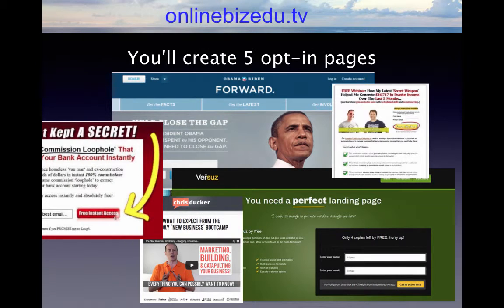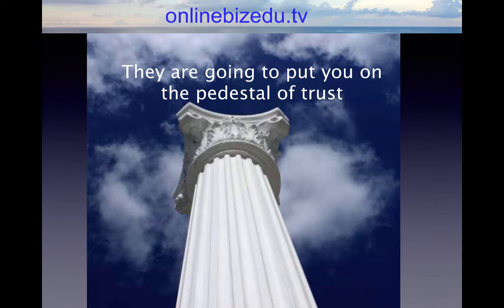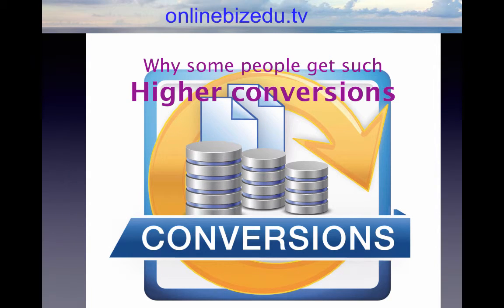Since you have five reports, you will create five opt-in pages — and that is kind of the secret. You have five reports, so you are going to create five opt-in pages. The reason for this is because you already know your target prospect was searching for a solution to each of the symptoms that you researched. You want to get in front of them every chance you can when they are searching. So the more they see you offering solutions to their symptoms, the more they will see you as a celebrity authority and put you on a pedestal of trust. When you understand this, it really makes sense as to why some people get such higher conversions.